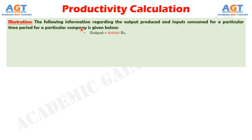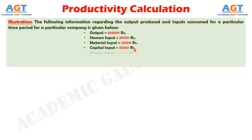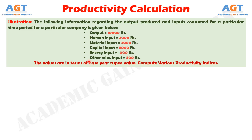The company had an output worth of 10,000 rupees, using human input worth of 3,000 rupees, material input worth of 2,000 rupees, capital input worth of 3,000 rupees, energy input worth of 1,000 rupees, and other miscellaneous inputs worth of 500 rupees. The values are in terms of base year rupee value. We have to compute various productivity indices — that is, calculate the partial productivity, total productivity, and total factor productivity based on the given information.